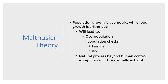Malthus was concerned that population growth was occurring at a more rapid pace than was food growth, and that eventually the size of the population would outstrip the size of the food supply, and this would lead to famine and war. He also believed that this was a natural process outside of human control, and the only saving grace that humans had was moral virtue and self-restraint.